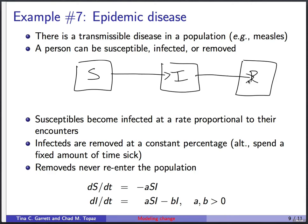The assumptions: susceptibles become infected at a rate proportional to their encounters with sick people — like someone sneezing on you in an elevator. We let susceptibles be s of t. The rate of change ds/dt equals a minus sign because getting sick decreases the number of susceptibles, times a constant of proportionality a, times the product s times i — jointly proportional to both populations. So ds/dt equals minus a times s times i, where a measures the transmissibility of the disease.